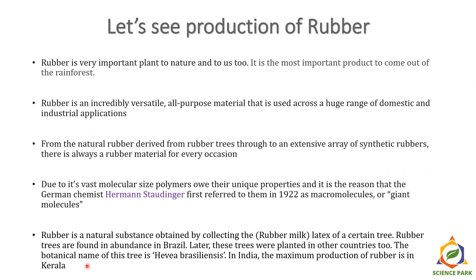Rubber is a very important plant product — the most important product to come out of the rainforest. It is an incredibly versatile, all-purpose material used across a huge range of domestic and industrial applications, from natural rubber derived from rubber trees to an extensive array of synthetic rubbers. Due to its vast molecular size, rubber owes its unique properties to polymers, which is why German chemist Hermann Staudinger first referred to them in 1922 as macromolecules, or giant molecules. So yes — rubber is a polymer.